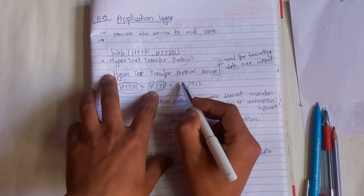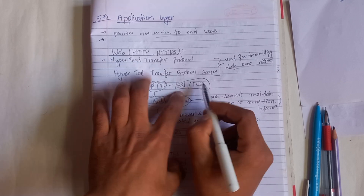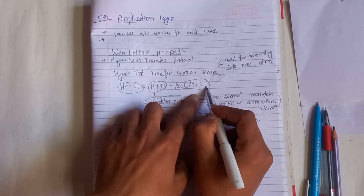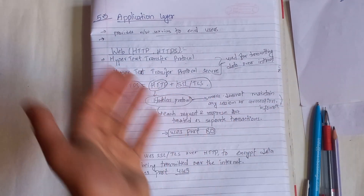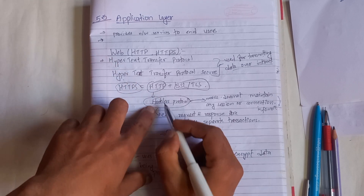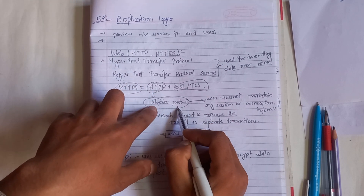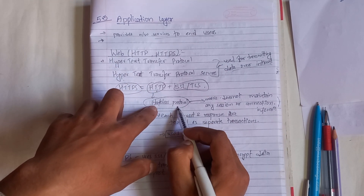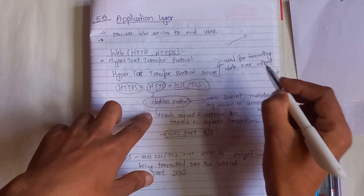HTTPS uses a secure socket layer or transport layer security protocol. It is called a stateless protocol. You can call a connection, call a search, call your article.